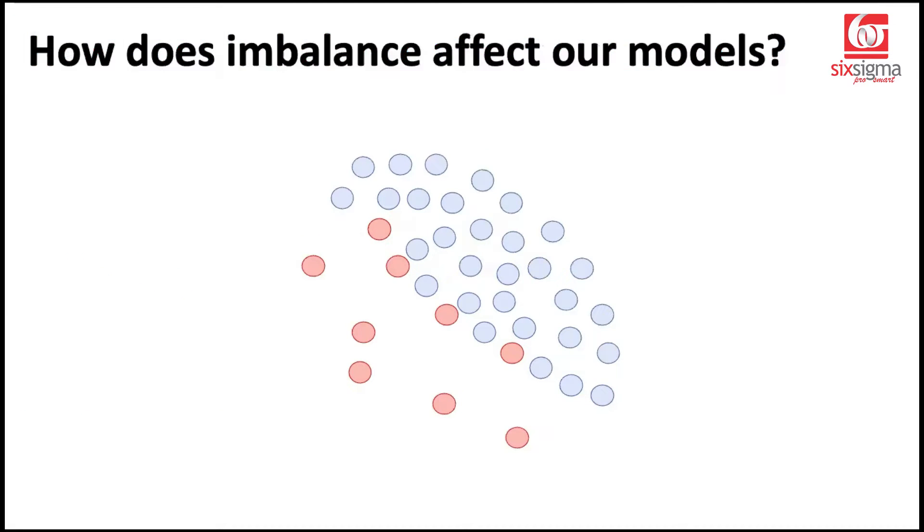This is a problem because when your machine learning model is being trained, it's actually learning about the data. It's going to learn more or better about the class blue because that occurs in abundance. So it tends to understand blues relatively better compared to the reds. Then how do we solve this problem?